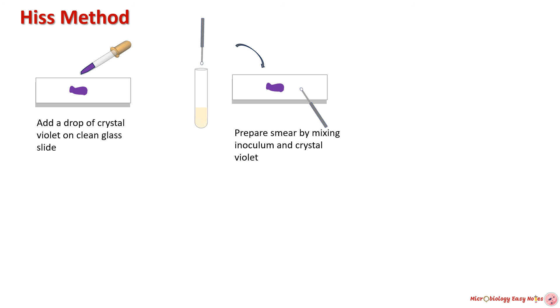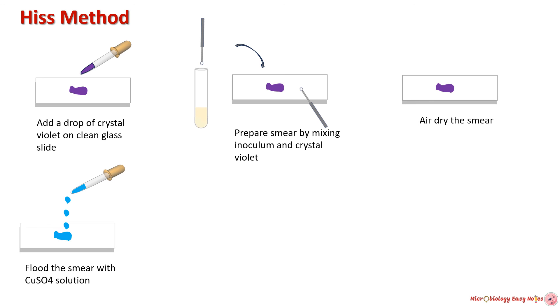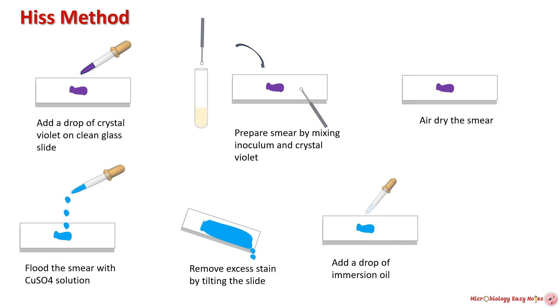Procedure of His method: take a clean, sterilized or grease-free slide and add a drop of crystal violet to the center. Prepare a smear by taking an inoculum from the bacterial culture and mix it with the crystal violet. Allow the smear to air dry. Flood the smear with copper sulfate solution and remove the excess stain by tilting the glass slide. Add immersion oil to the stained area and observe under the microscope.